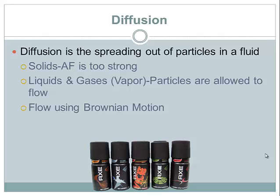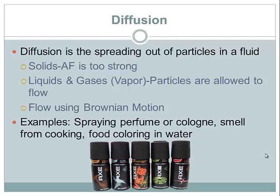For example, if someone sprays cologne or you have a candle burning in your house and you can smell it throughout, that's because the particles of gas or vapor — or even liquids in some cases — have spread out throughout the container. That's why gases don't have a definite volume or definite shape; they take the shape of their container. Other examples include the smell from cooking — around Thanksgiving you can smell it in all parts of the house — or simply putting food coloring in water and watching it spread out.